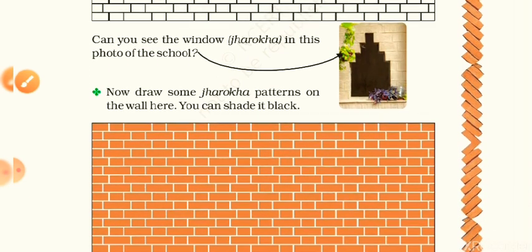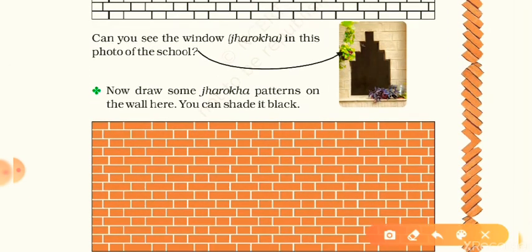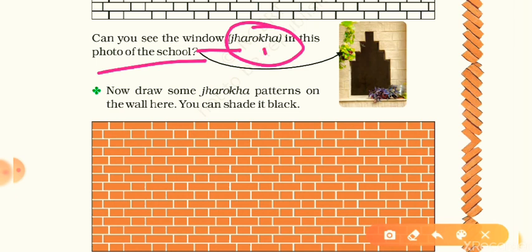Now can you see the window — the jharokha — in this photo of the school? After the floor pattern and jali pattern, we are now looking at the jharokha pattern. We will call this type of design the jharokha pattern.